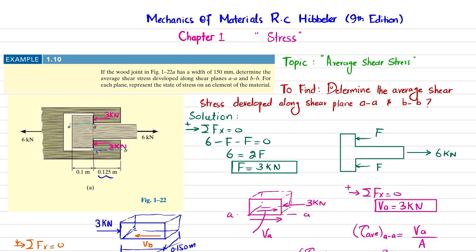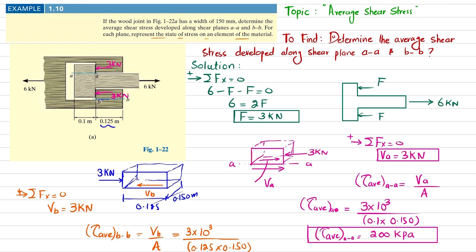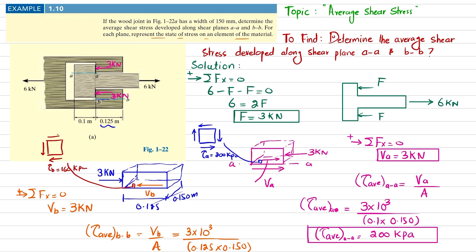The question also asks to represent the state of stress on the element of material. For point A, the shear stress on the element is τ_A = 200 kilopascals, with the opposing face in the opposite direction, as expected for shear stress on an element. For point B, the element has shear stress τ_B = 160 kilopascals, directed toward each other on opposite faces.